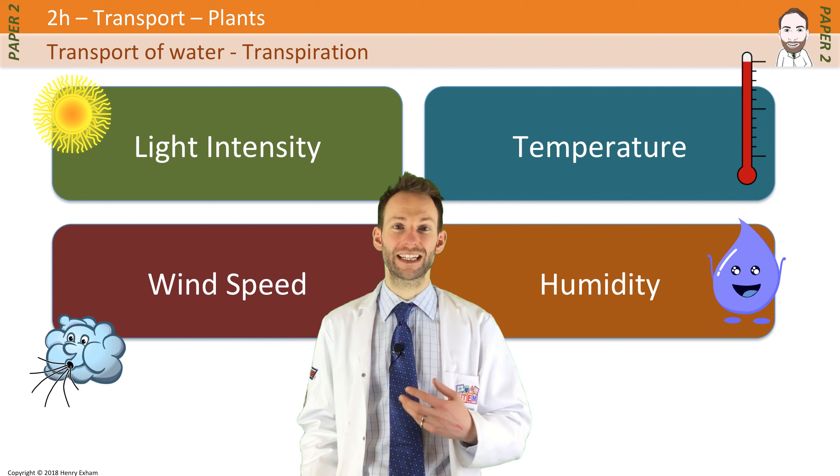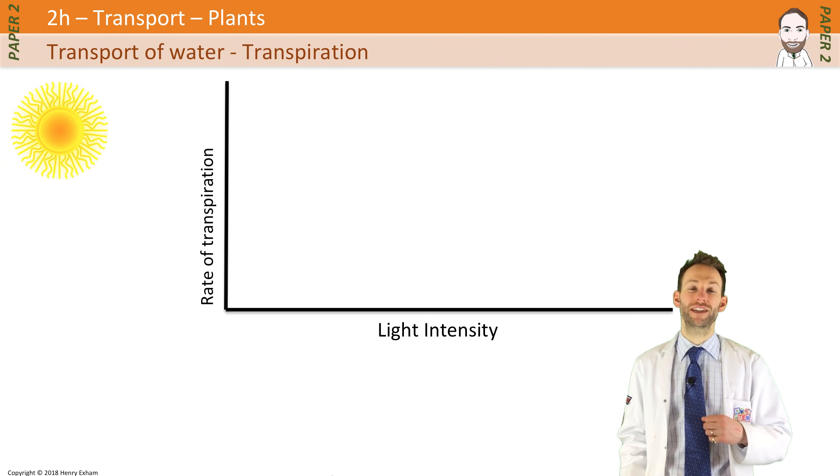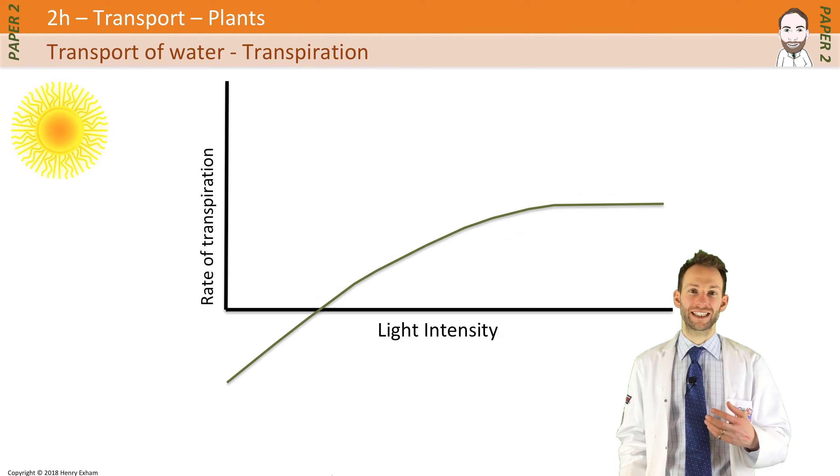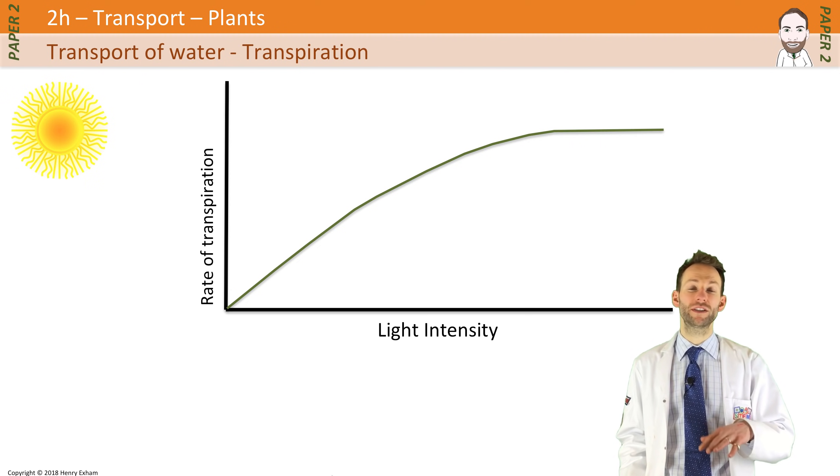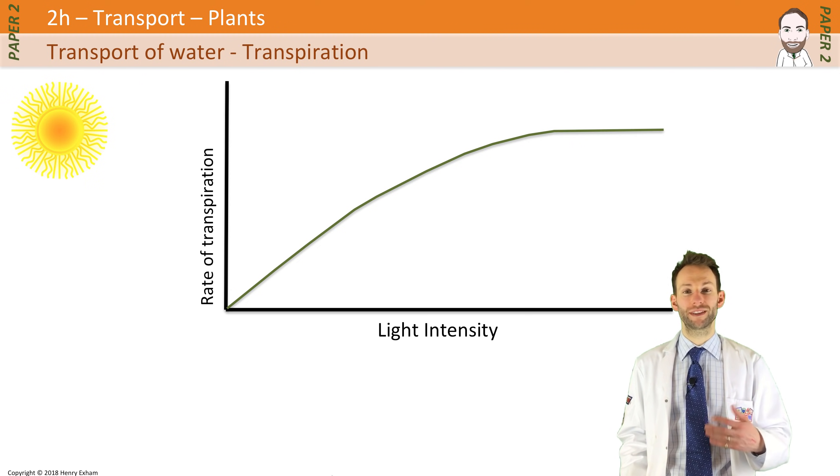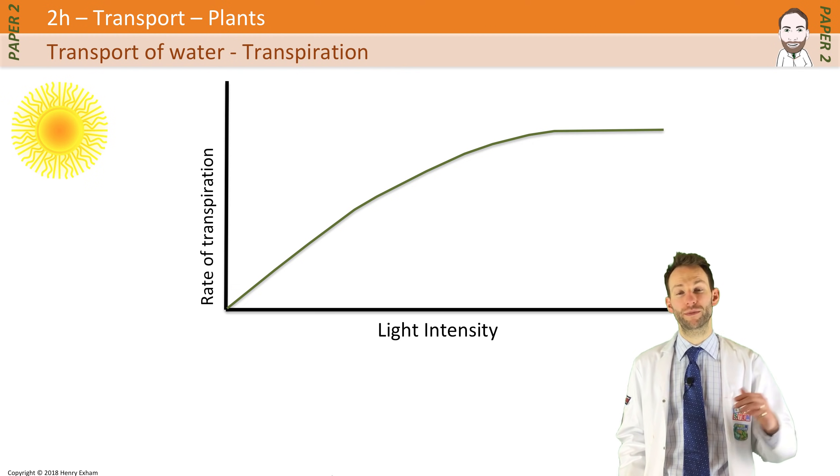So starting with light intensity, you should be able to sketch each of these graphs as well. So this is what we'd expect to see with light intensity. As light intensity increases, more stomata open for photosynthesis. With more stomata open, more transpiration will occur. However, there will come a point where all the stomata are open. It doesn't matter how much more light you give that plant, all the stomata are open, and therefore the graph will plateau. Transpiration cannot increase any further.